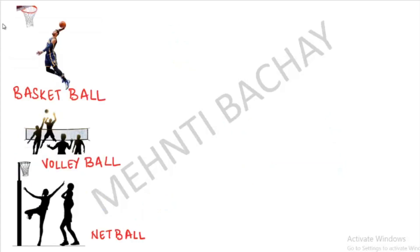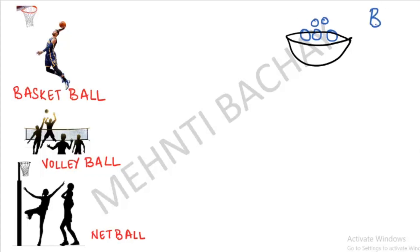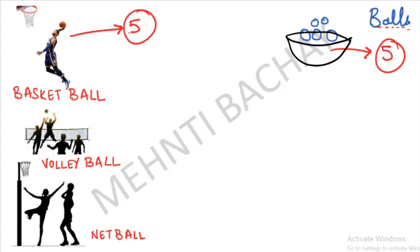Next games are Basketball, Volleyball, and Netball. For Basketball, think about the word 'balls' — it has 5 letters. So in a basket, there are 5 balls, meaning Basketball has 5 players.